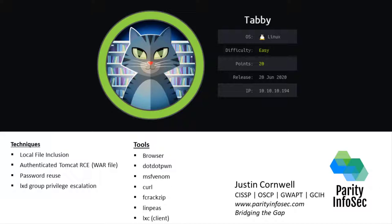Tabby was an easy box put out by user Egress on Hack the Box. It's relatively simple with some tricks mostly related to Tomcat, which you can determine from the icon. We'll go over techniques including local file inclusion found on one website, then pivot to the Tomcat manager. We'll use Tomcat upload of a WAR file to get remote code execution for our foothold, then find files, passwords, and use fcrackzip. Password reuse will get us to our first user.